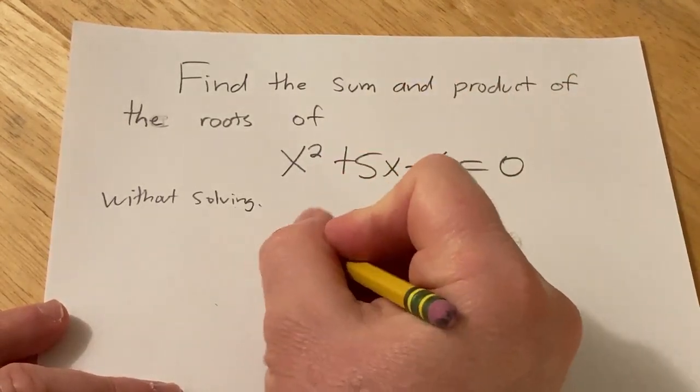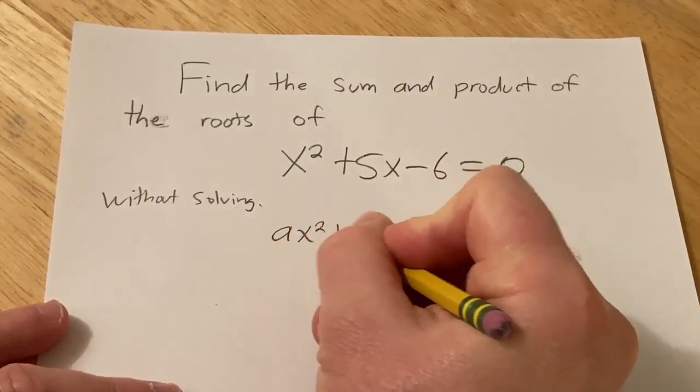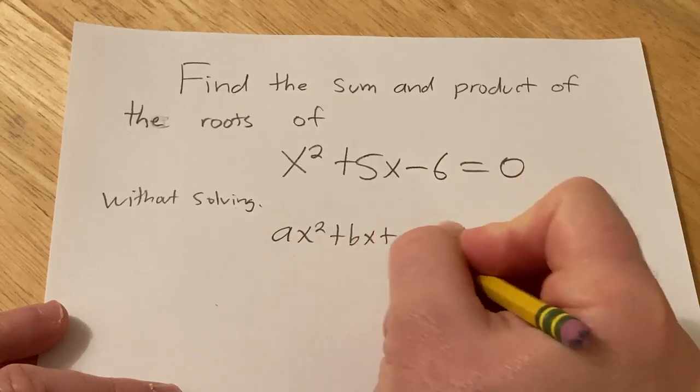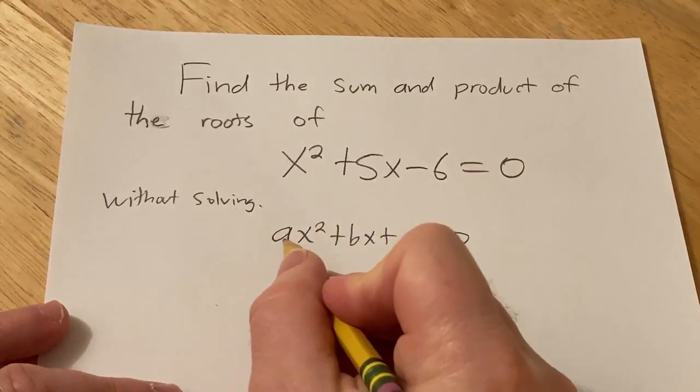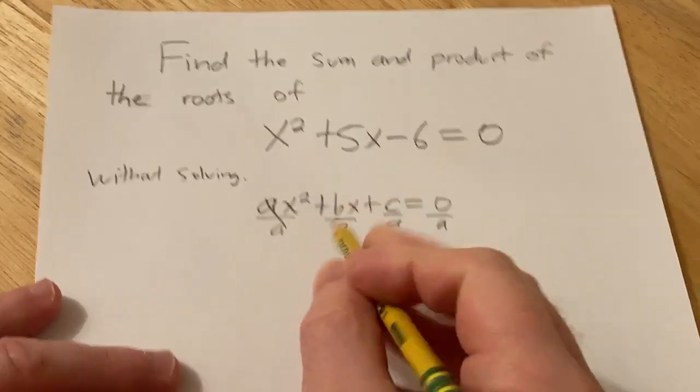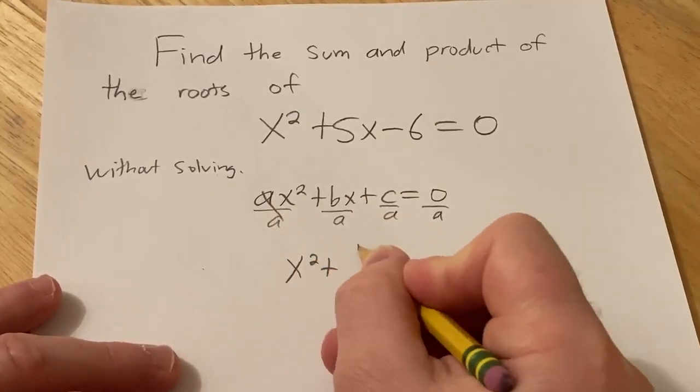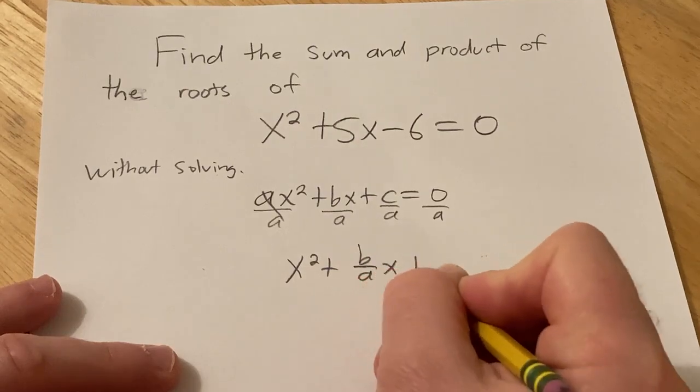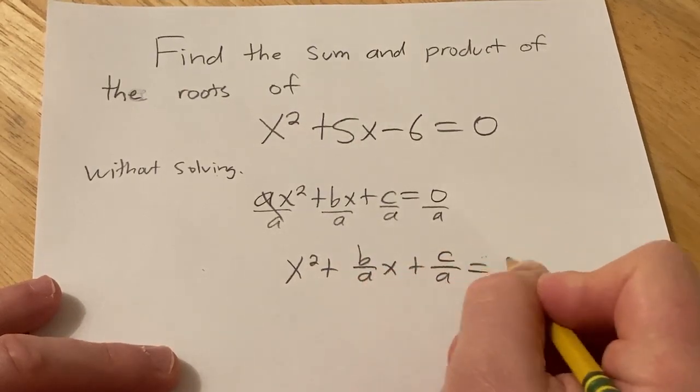So here's the trick. If you have a quadratic equation, ax squared plus bx plus c equals zero, and you divide by a, this is a really cool memory trick, you get x squared plus b over a x plus c over a equals zero.